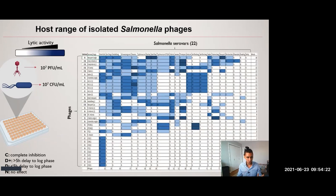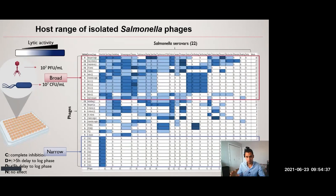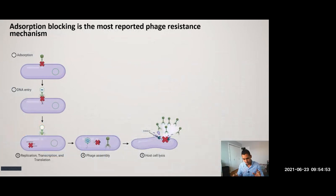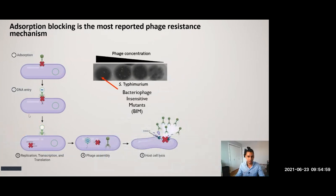In this table, I want you to see the lower portion where we isolated phages with a very narrow host range, only capable of infecting one out of the 22 Salmonella serovars we tested. On the top are the phages we wanted — those with a broad host range. We took these phages to the next step, which is selecting the ideal receptor, because, as mentioned, bacteriophage resistance is one of the main challenges and bacteria can block infection at any single step in the lytic cycle.